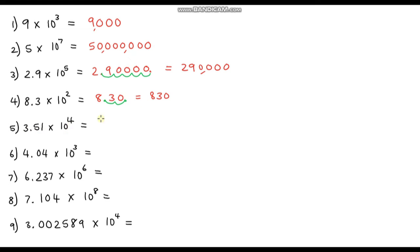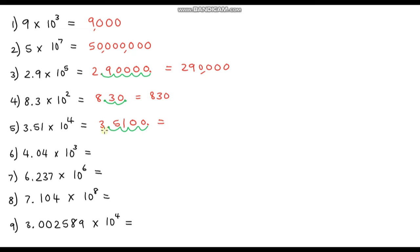Question five: 3.51 times 10 to the power of 4. So we have 3.51, and let's add some placeholder zeros. We're moving the decimal point four places — one, two, three, four. Getting rid of the superfluous zeros, our answer is 35,100 — thirty-five thousand one hundred.